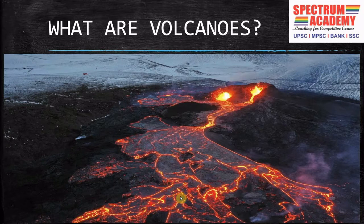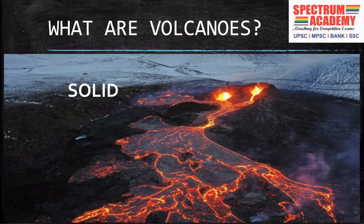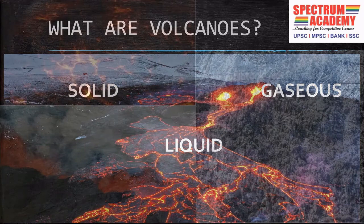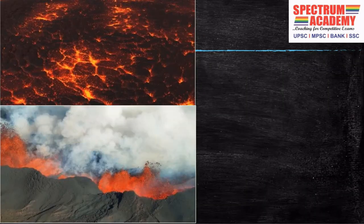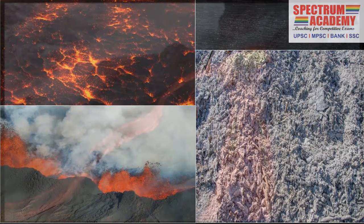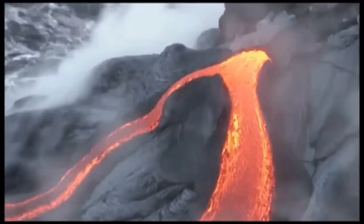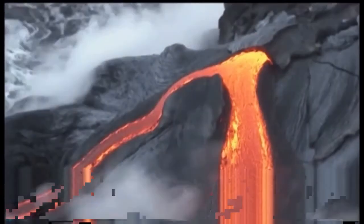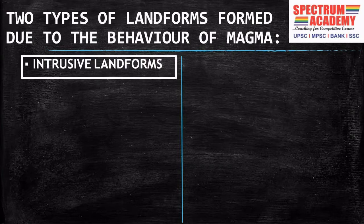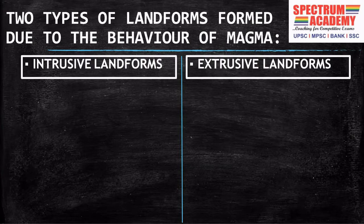Volcanic activities have a great impact on our earth's landforms. A volcano is an opening through which solid, liquid and gaseous materials like molten lava, ash, and gases come out to the surface from earth's deep interior. Basically, there are two types of landforms formed due to the different behaviors of magma: the first is intrusive landforms and the second is extrusive landforms.